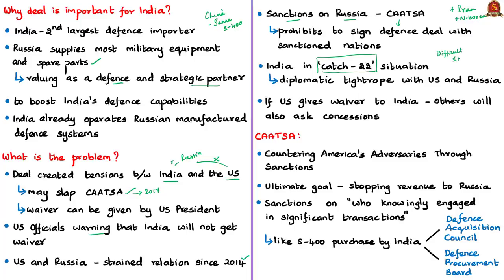India has to work on a diplomatic tightrope between Russia — a trusted but waning partner — and the United States — a growing yet temperamental partner. The US has been clear about sanctioning countries signing defense deals with Russia; it sanctioned China last September for buying S-400s. If USA allows India a waiver, other countries will also press for similar concessions. The US cannot afford to ignore India's defense requirements, as USA has increased its arms exports to India more than five times in the past five years, amounting to 15% of India's defense procurement.